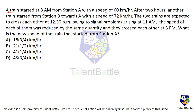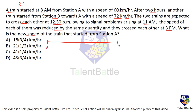Question 4: A train started at 8 AM from station A at 60 km/h. After 2 hours, another train started from station B towards A at 72 km/h. The two trains were expected to cross at 12:30 PM. Due to signal problems at 11 AM, the speed of each was reduced by the same quantity and they crossed at 3 PM. What is the new speed of the train from station A?